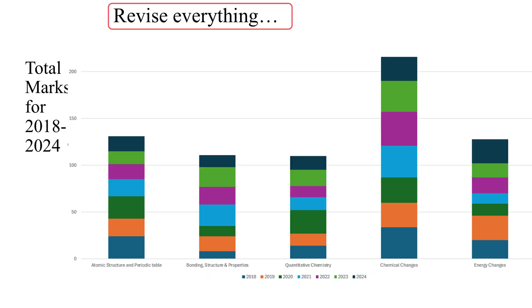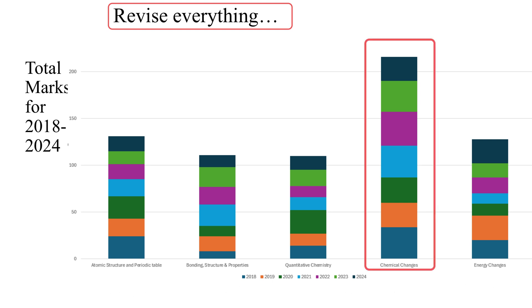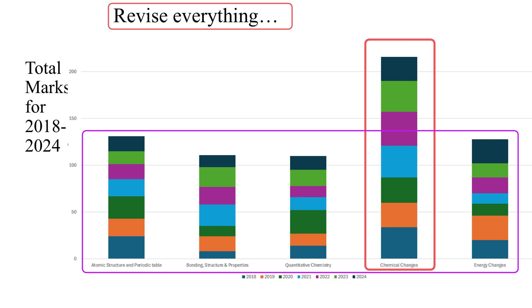If we take a look at a graph of how many marks have been available for each of the five topics that can be assessed on Paper 1, you can see that there is a standout topic that carries the most marks on average across all of the papers, and that is Topic 4, the chemical changes topic. Beyond that, the other four topics are pretty evenly distributed, and each topic is assessed pretty consistently across all seven past papers.